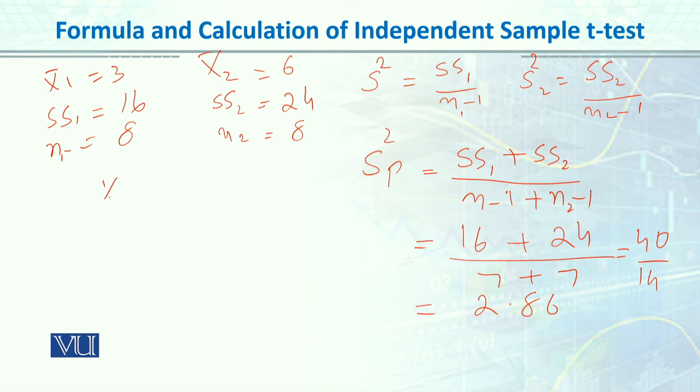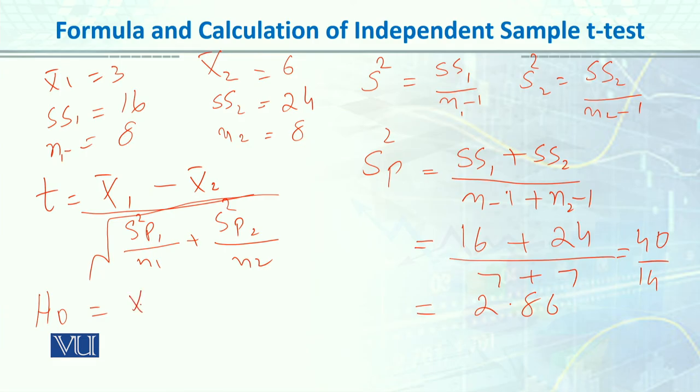The t formula is mean 1 minus mean 2 divided by the square root of pooled variance divided by n1 plus pooled variance divided by n2. This is the standard error of the difference and this is the mean difference of the two groups. But more importantly, we first need to make a null hypothesis and then an alternative hypothesis. Our null hypothesis is mean 1 equals mean 2, and our alternative hypothesis is mean 1 is not equal to mean 2.